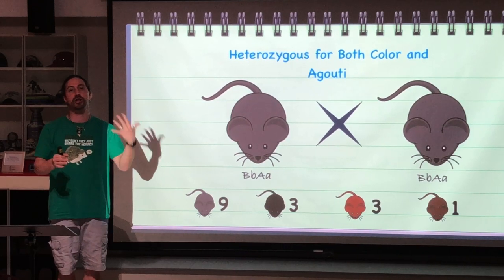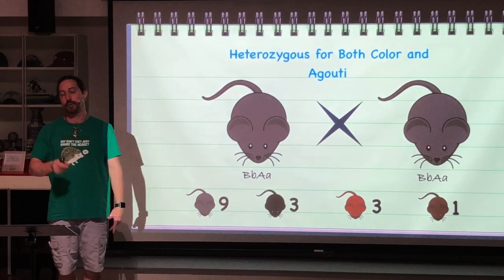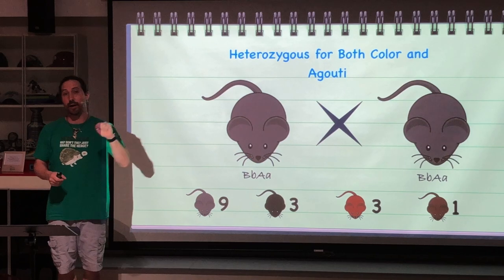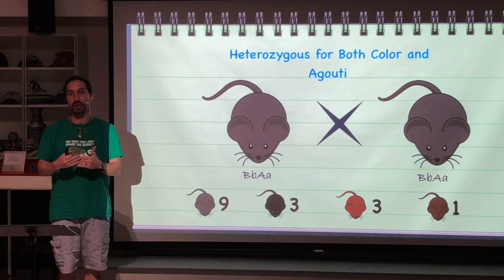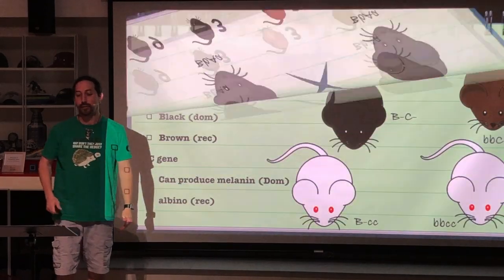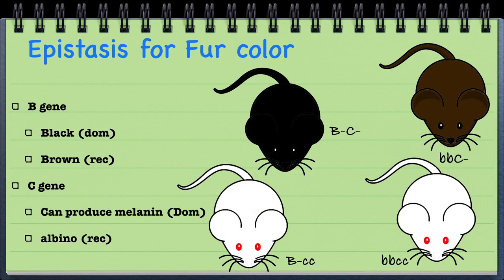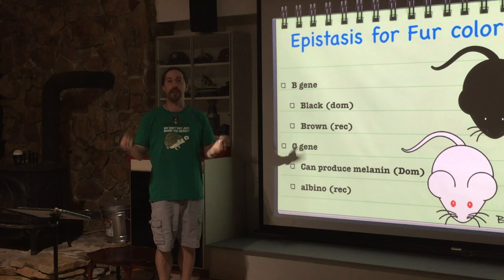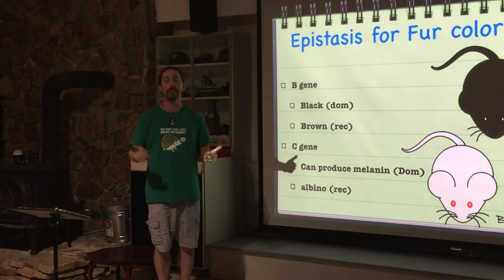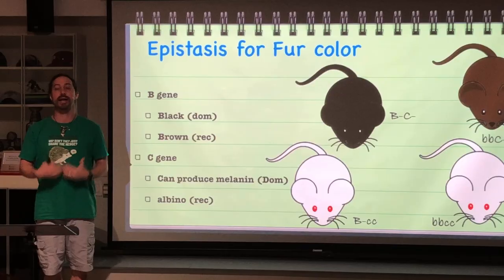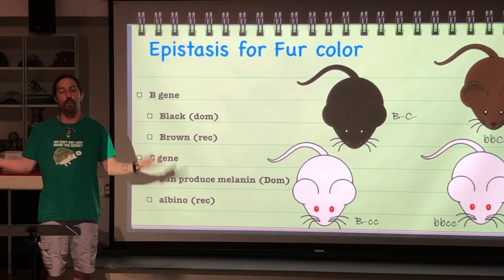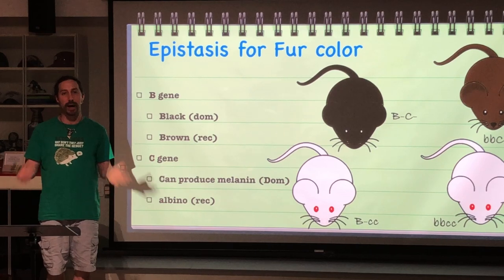That does not show epistasis — we are looking at two alleles, but they don't have an epistatic relationship. For the epistatic relationship, we're going to add another gene: whether the coat can have color at all. If they have a dominant allele, the mouse can produce coat color. If homozygous recessive, they cannot produce color and will be albino.